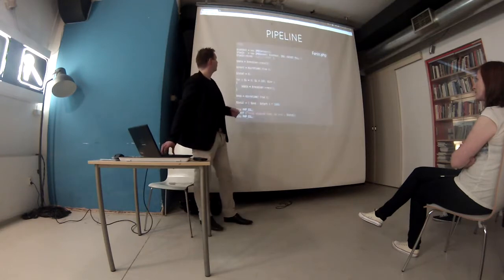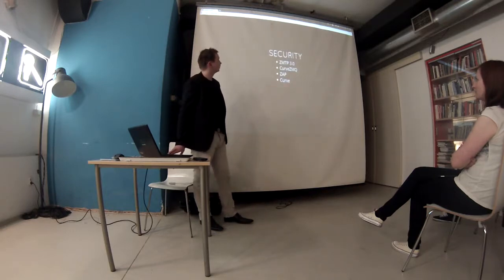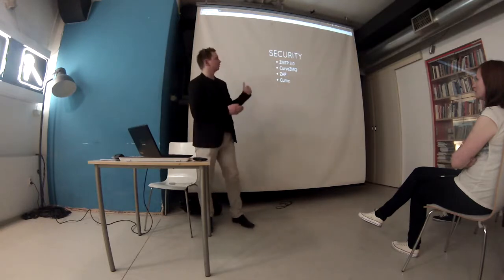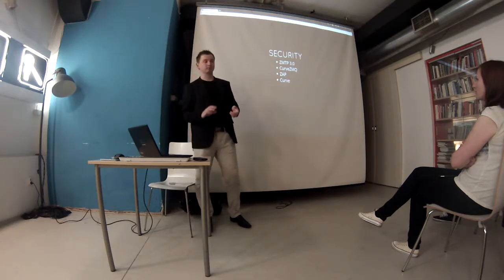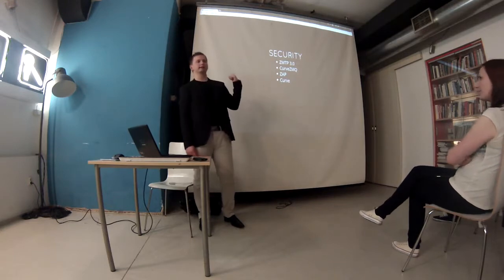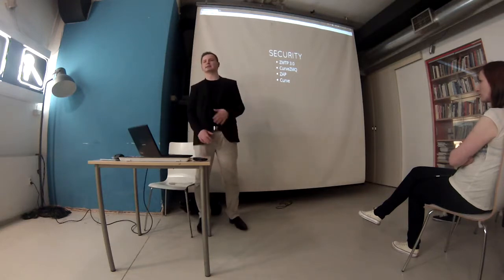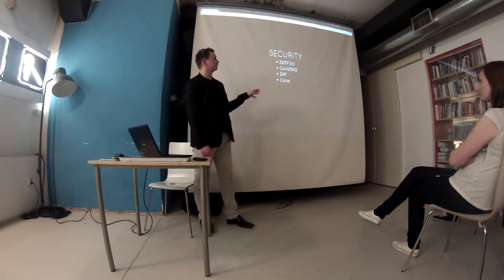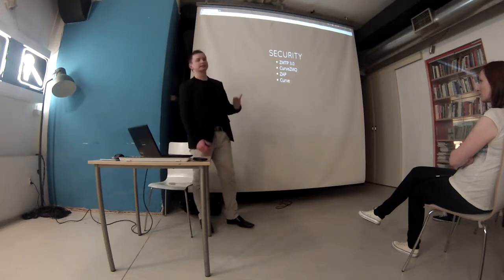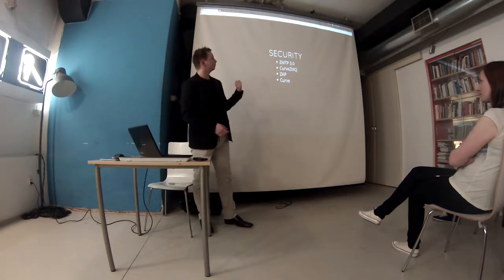This is the sink or fan-in code — we pull data from the workers and most of the logic is just calculating total processing time. Now for the security part. The security features came around the time of the Snowden story, because the people at iMatix — the company behind ZeroMQ — saw that security was essentially broken and needed to do something about it. Before version 4, you would basically have to implement your own security by encrypting messages before sending them. Now there are security mechanisms built inside.